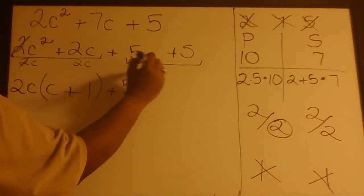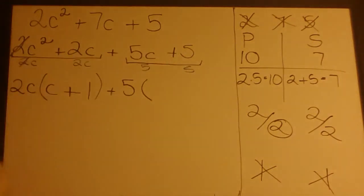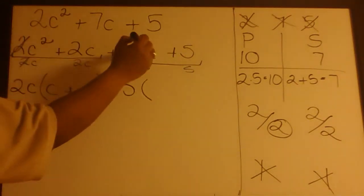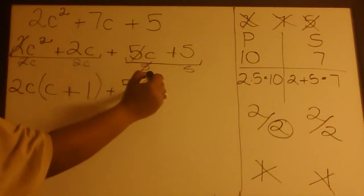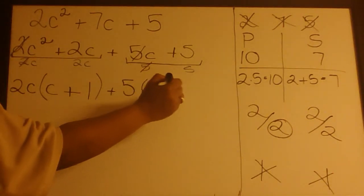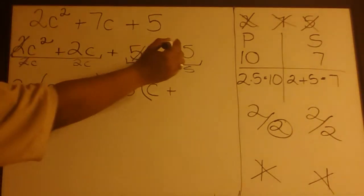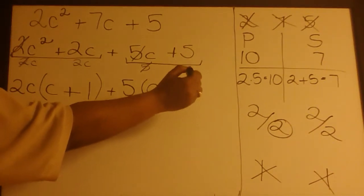Dividing each term by the 5 that we factored out, notice here that the 5's cancel, leaving us with C. And 5 divided by 5 is 1.